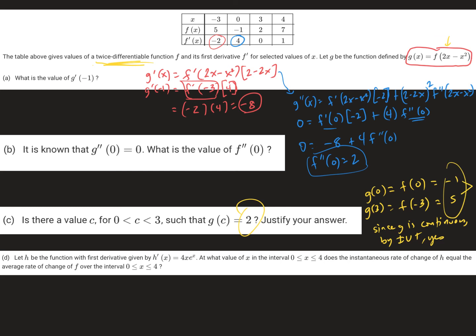And then the last problem. Last problem says, let h be a function with the first derivative. So they've given you a derivative already, and then they want that derivative to equal the rate of change of f. So they're talking about two different functions here, one with the a rock, that's f, and one with the i rock, that's h, that they've already provided you. So my a rock for f for that interval would be f of 4 minus f of 0 all over 4 minus 0.